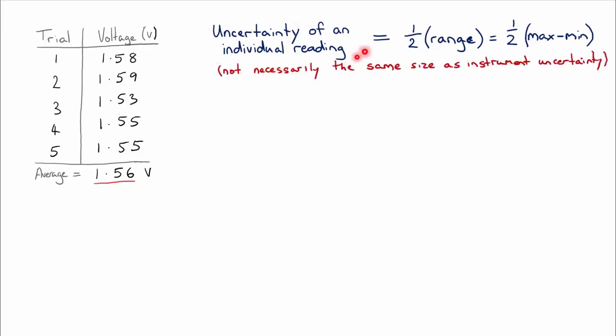The uncertainty that you calculate for an individual reading might turn out to be larger than the instrument uncertainty because of sources of random error that cause the numbers to vary evenly above and below your average value.